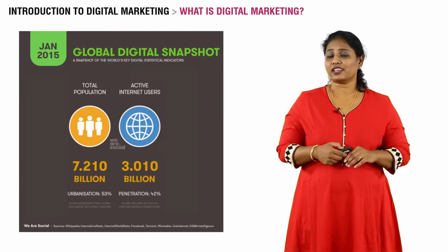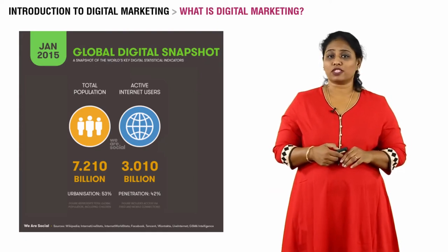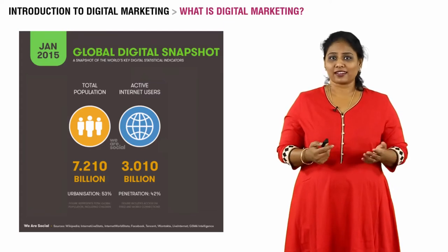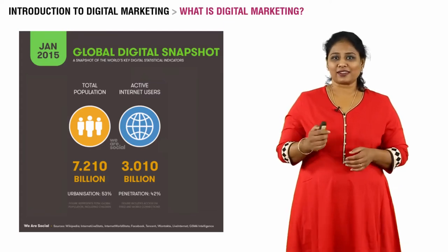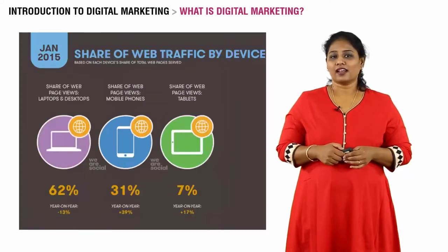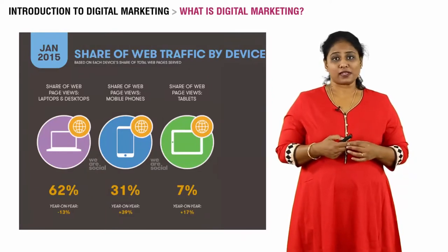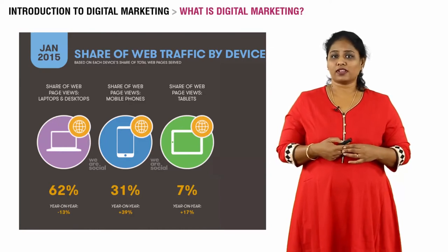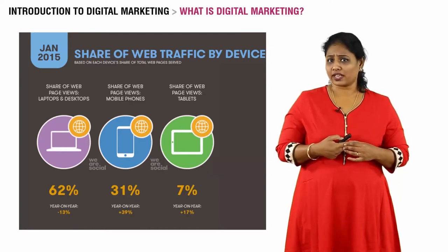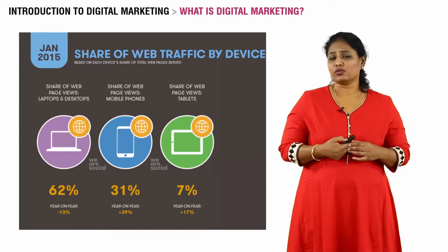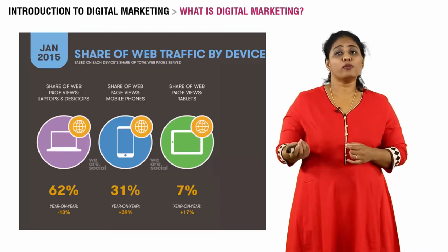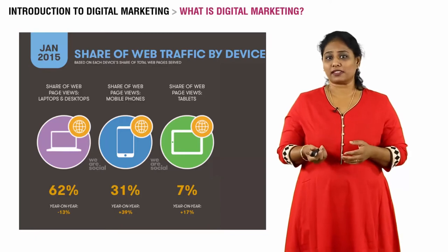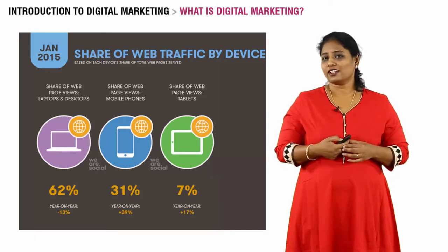There are 3 billion people who are online today, which is close to 40% of the world's population. Who are these people, what are they doing, and how are they doing it? 62% of these people are browsing the internet through their computers or desktops, 31% — which is again a huge number — are doing so through mobile devices. The smartphone revolution has made this possible.